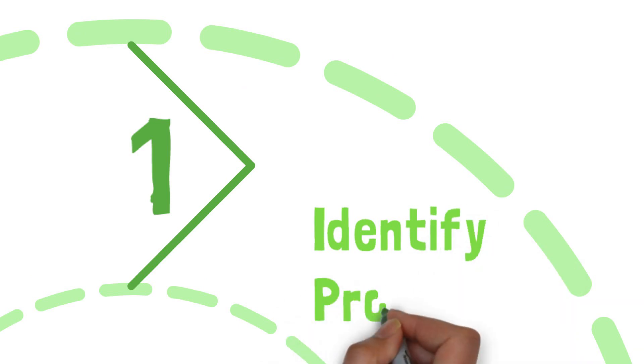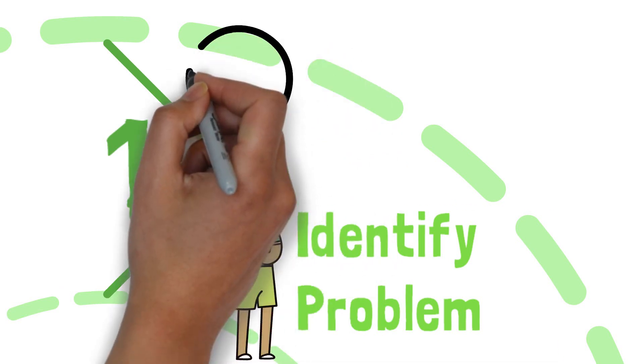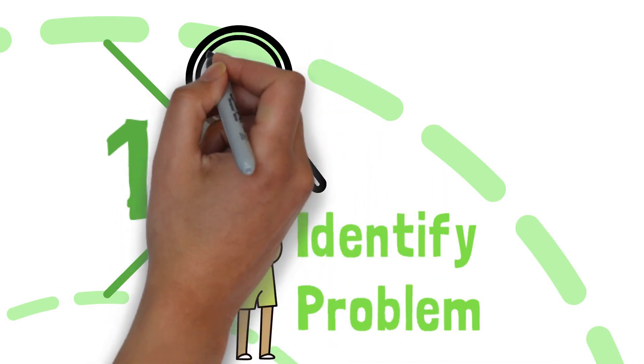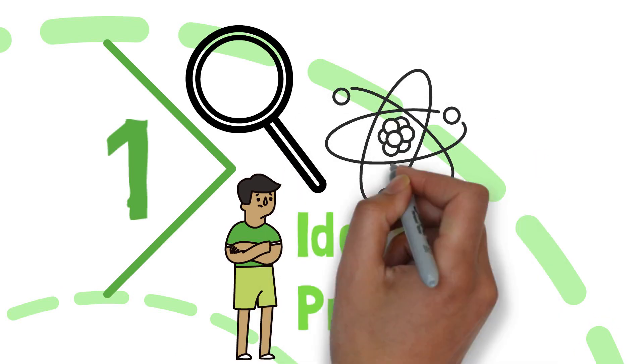The first step towards solving a problem is to identify what you're trying to solve. Sometimes the problem isn't quite what you think it is, so be sure to consider all of the possibilities and how they might cross over with one another.